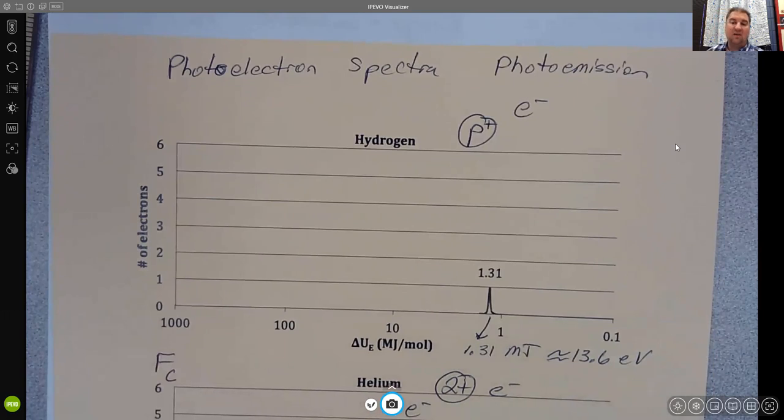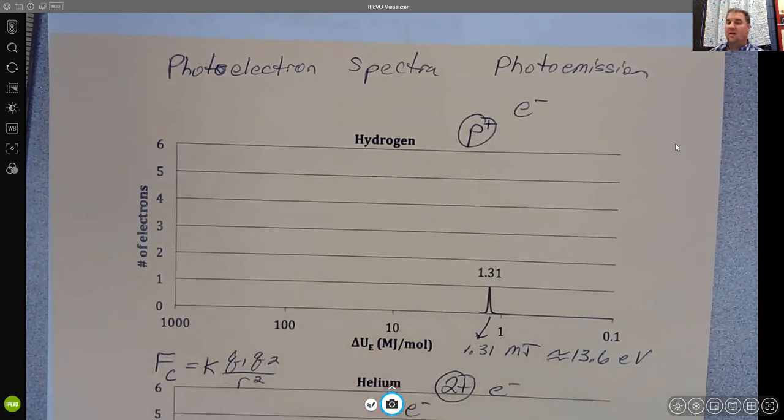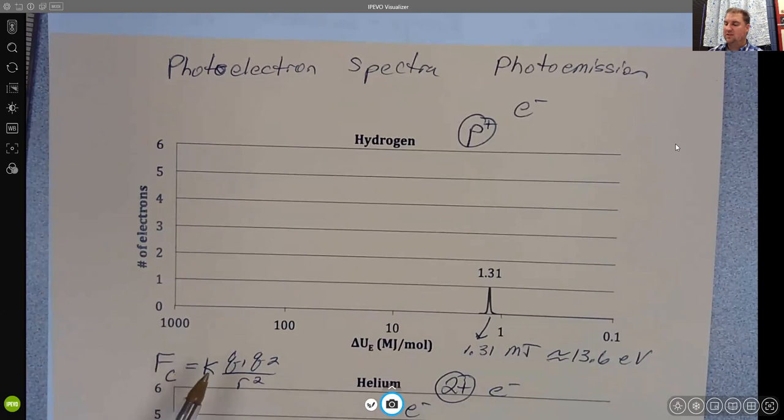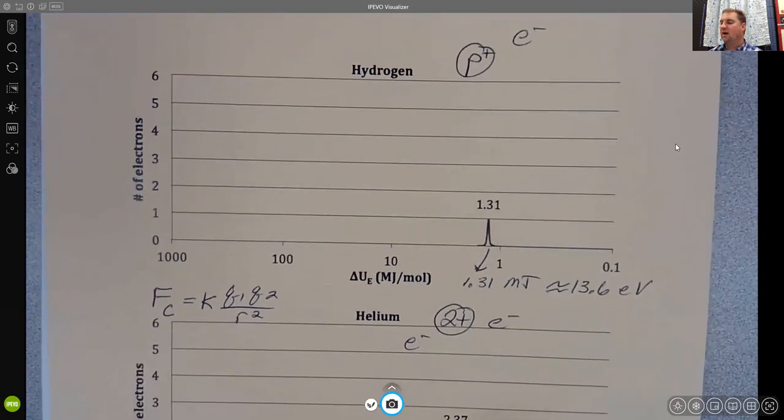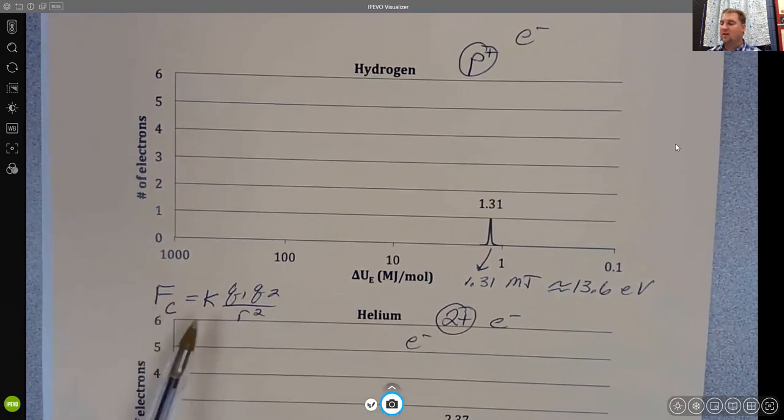Those electrons are going to feel a much larger amount of what we call coulombic force. This is the most important equation in physics. The coulombic force, the amount of force holding the electrons in to the atom, is equal to some constant times q1 times q2 over r squared, where q represents charge. One of those q's would be the charge on the nucleus, the other q would be the charge on the one single electron. The r squared is equivalent to how far away from the nucleus the electron is. So the higher the charge gets in the nucleus, the stronger the coulombic force. The closer the electrons get to the nucleus, the stronger the coulombic force.